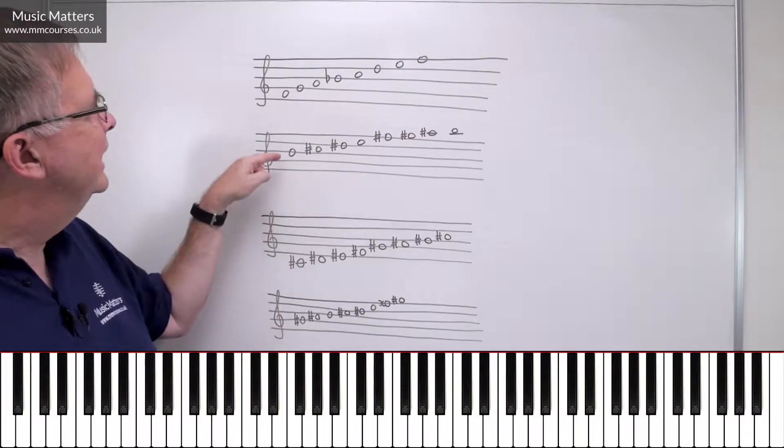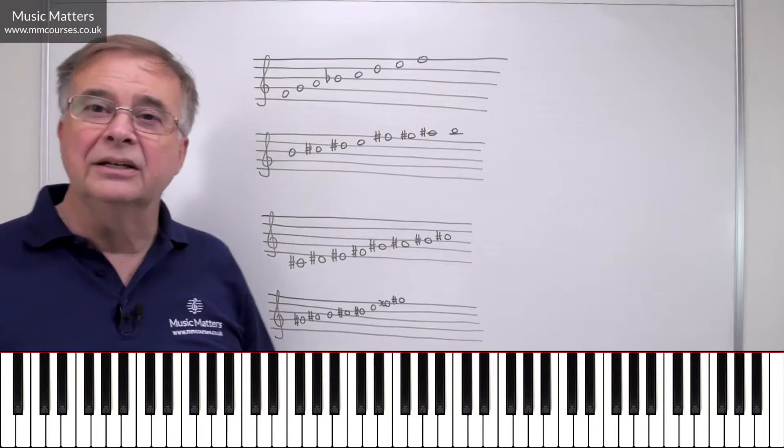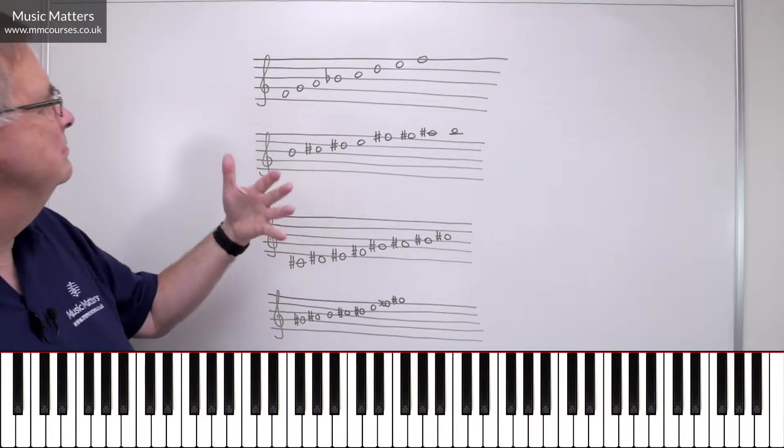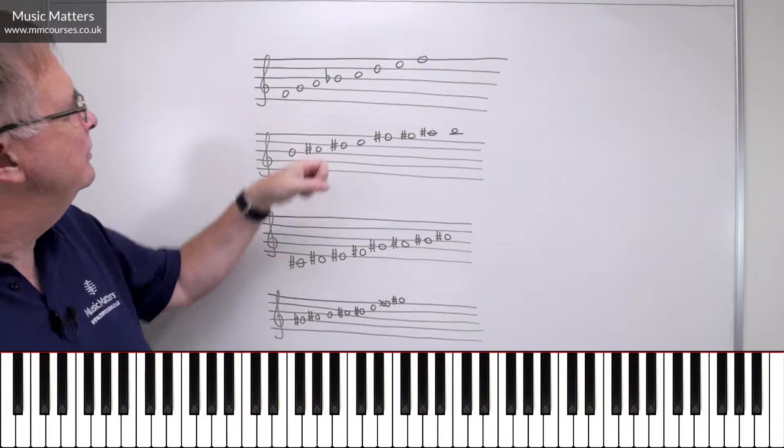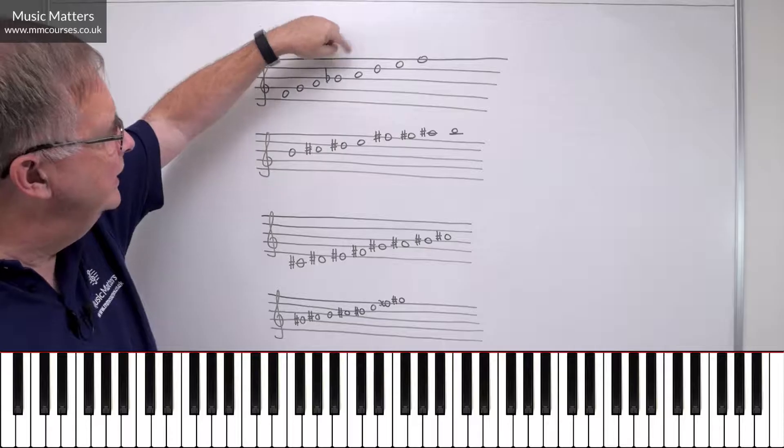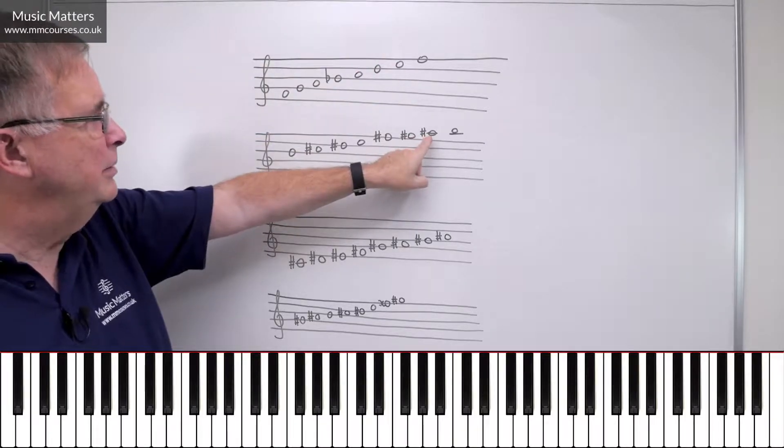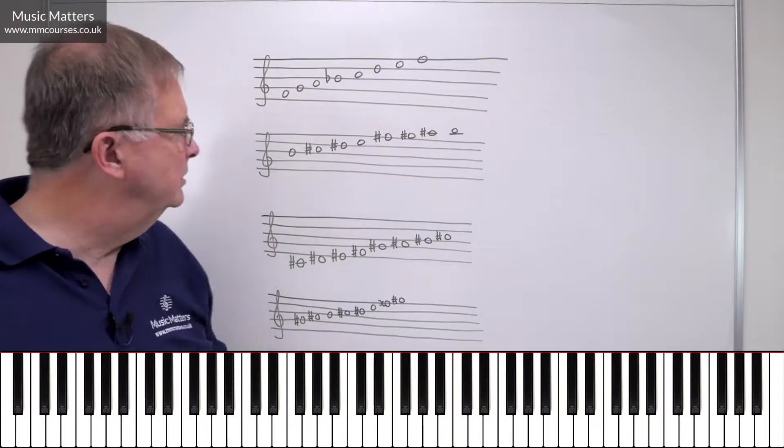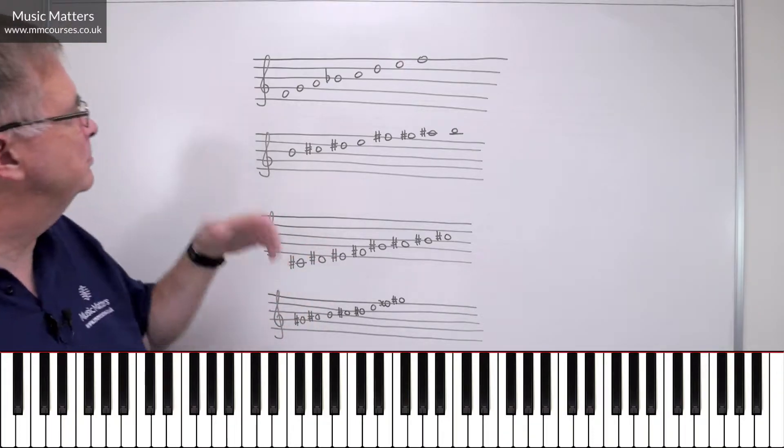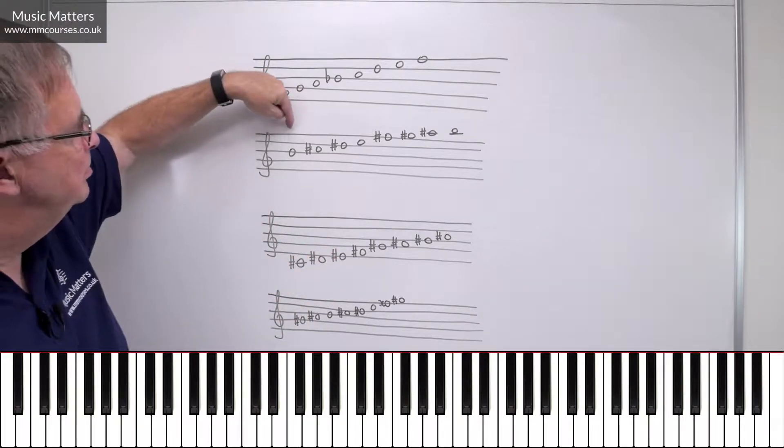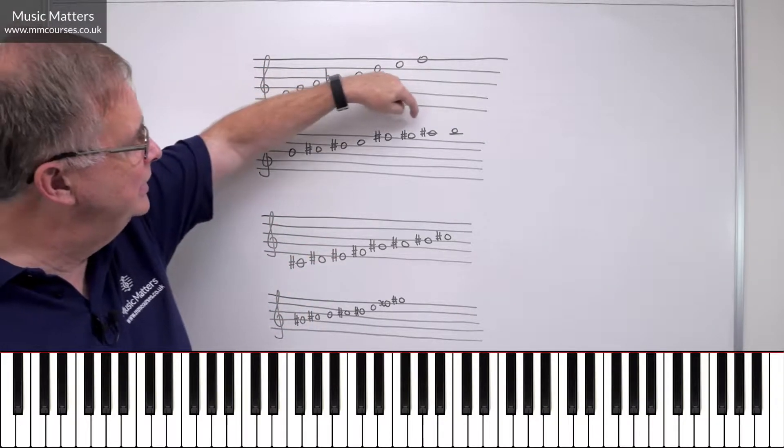But you can see, in this next scale that I've scribbled out, B-major, well, you know, we've got something different going on here, haven't we, because we had a B-flat there, but in B-major, the same note is A-sharp, and you can see why, for the same reason. B-major, one of each letter, B, C, D, E, F, G, A, B,